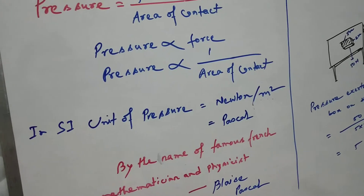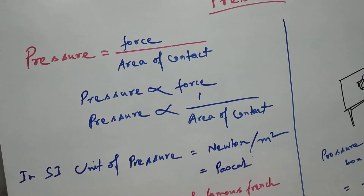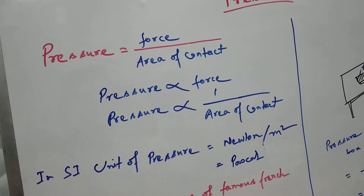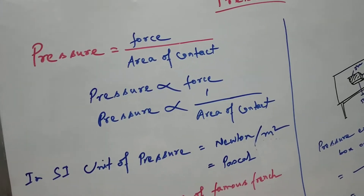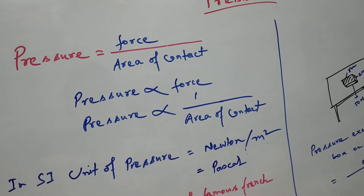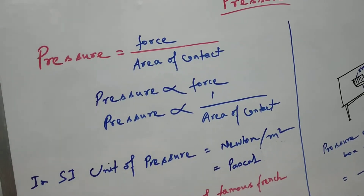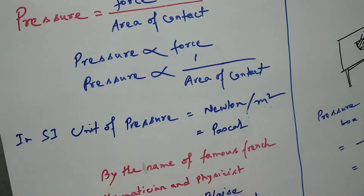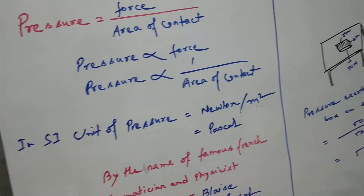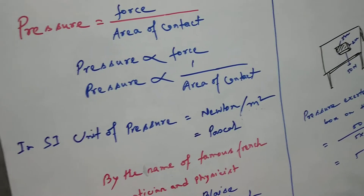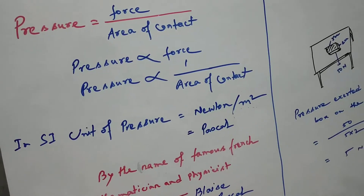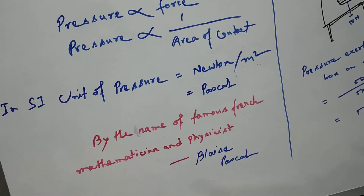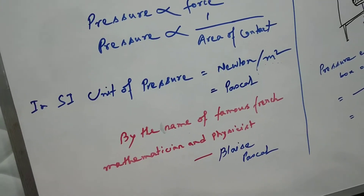In the SI system, the unit of pressure is newton per meter square, because pressure equals force divided by area. The unit of force in SI is newton and the unit of area is meter square. This unit, newton per meter square, is also known as pascal, named after the famous French mathematician and physicist Blaise Pascal.